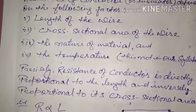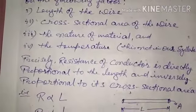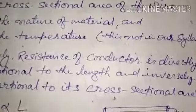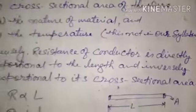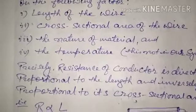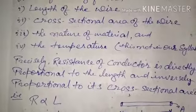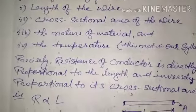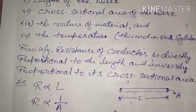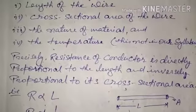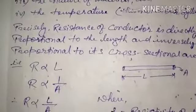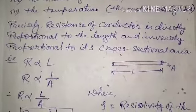The factors are: the length of the wire, the cross-sectional area of the wire, the nature of the material, and the temperature. However, temperature dependence of resistance is not in our Class 10 syllabus — it is a Class 12 topic. So basically these three factors we are going to discuss right now.